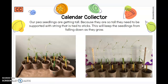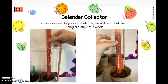Now that our peas are supported, let's record their height for today. Because our seedlings are so delicate we will read their height using a picture this week — it's a lot harder to move them around and put them under the camera. Looking at our pea seedlings, they're taller now than our centimeter ruler, which only goes up to 25 centimeters. So we need to look at the ruler on top to add more centimeters on. Our ruler stops at 25 centimeters, and we can see one more centimeter for 26 and one more centimeter to make it 27 centimeters tall today.